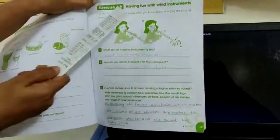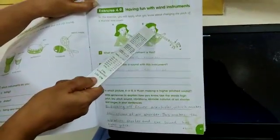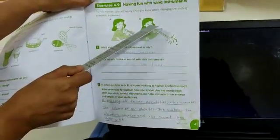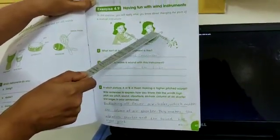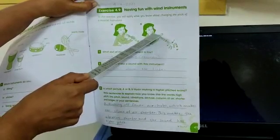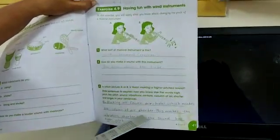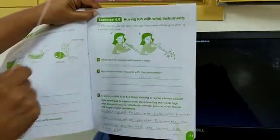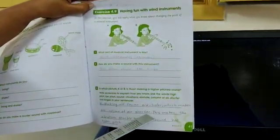Now see picture B. Where is she holding her hand? Here. She is blocking off only fewer air holes, which makes the column of air shorter.